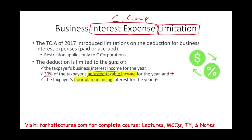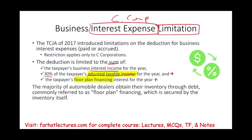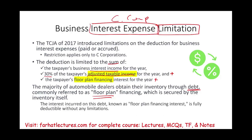Floor plan financing interest is how much it's costing you to finance your inventory. A good example is auto dealers. When you see cars in a dealer's lot, the dealer did pay for them, but they usually borrow money to do that — it's a lot of money, no one has millions sitting in the bank. The majority of auto dealers obtain their inventory through what's commonly referred to as floor plan financing, which is secured by the inventory itself as collateral.